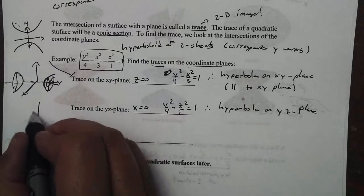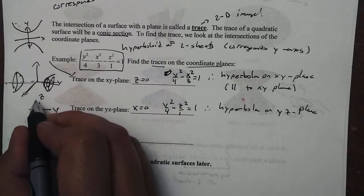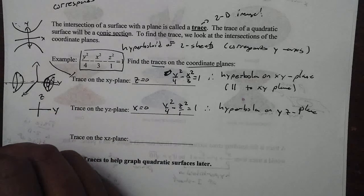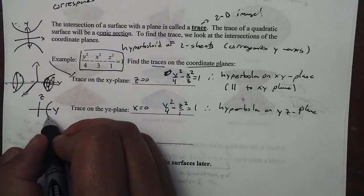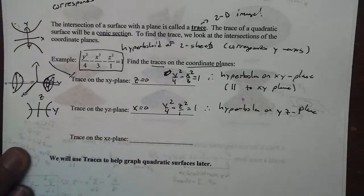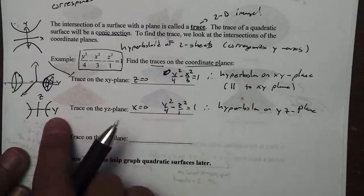So if I were to draw just the yz plane, we would get a hyperbola, again, opening up on the y axis right there. So that's what that trace would look like. And we can even draw it more accurately.